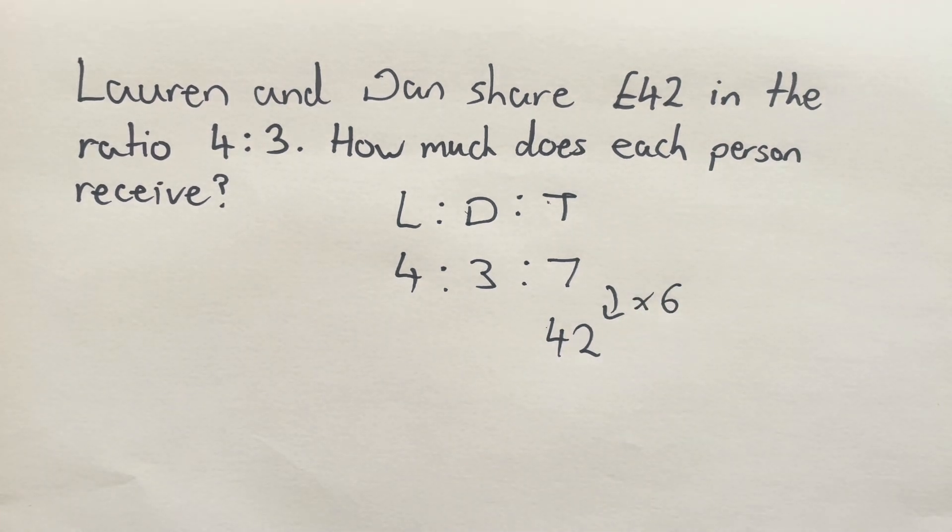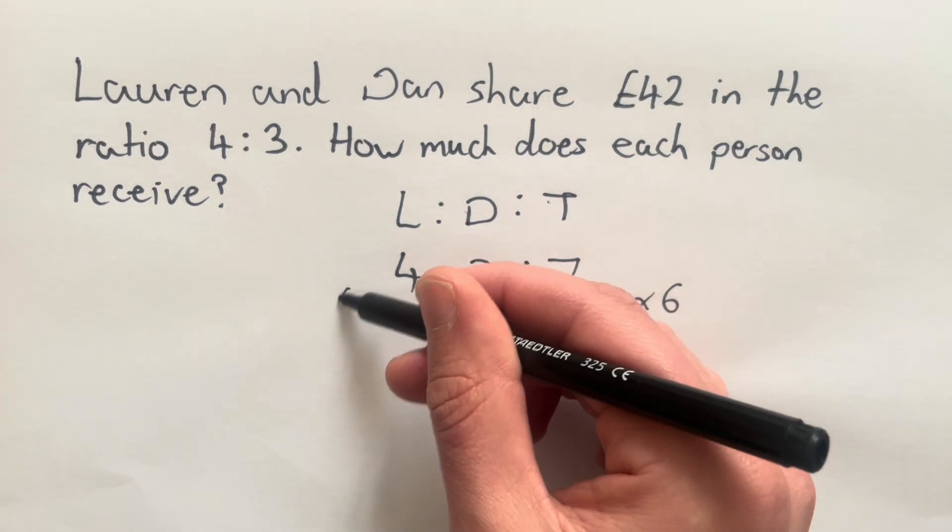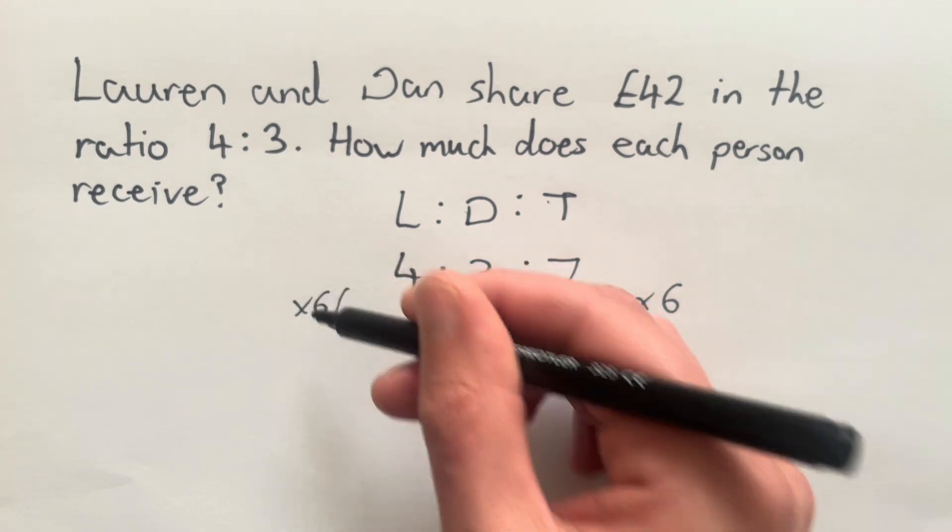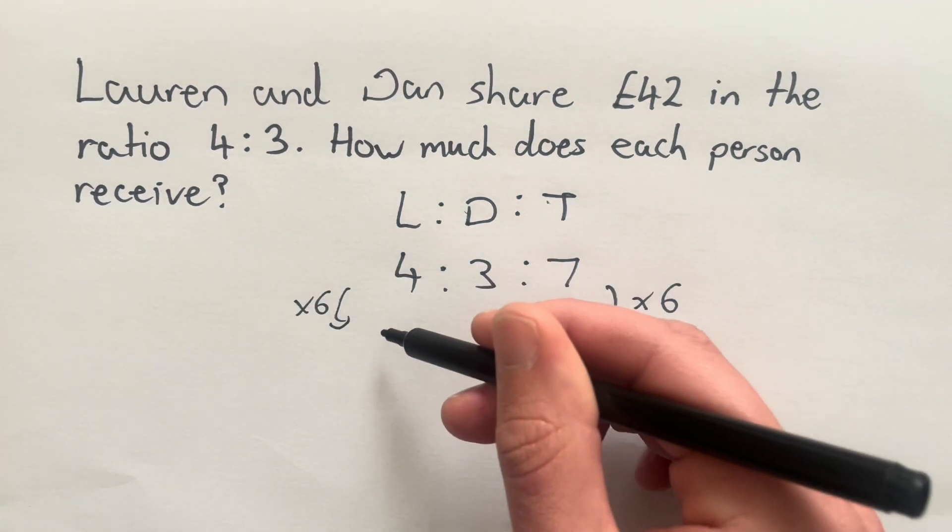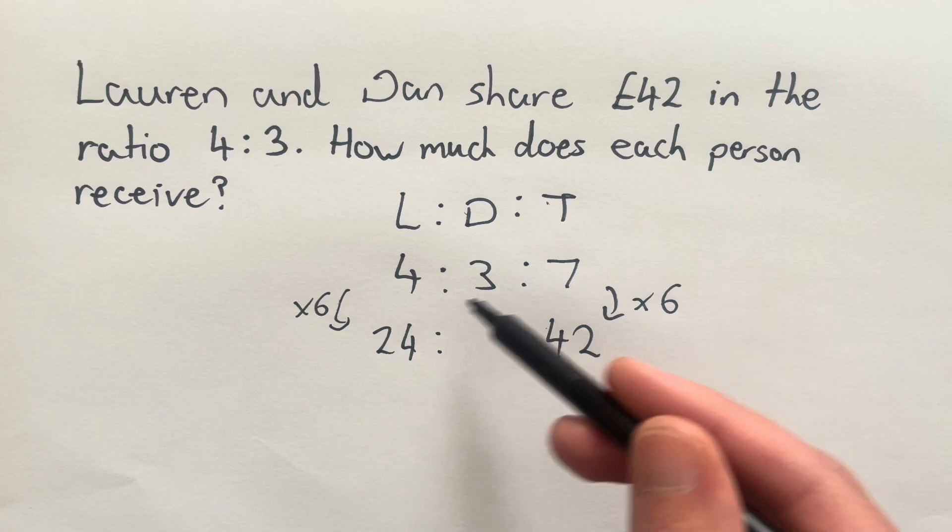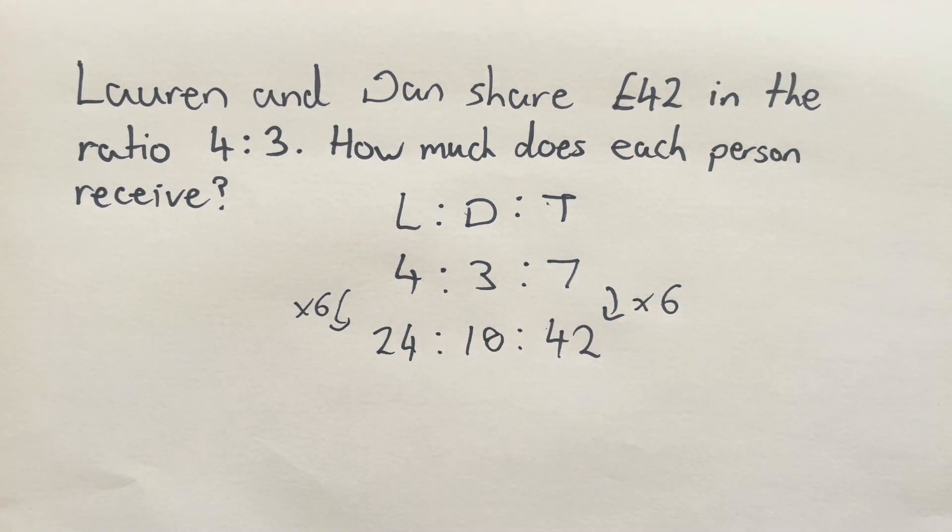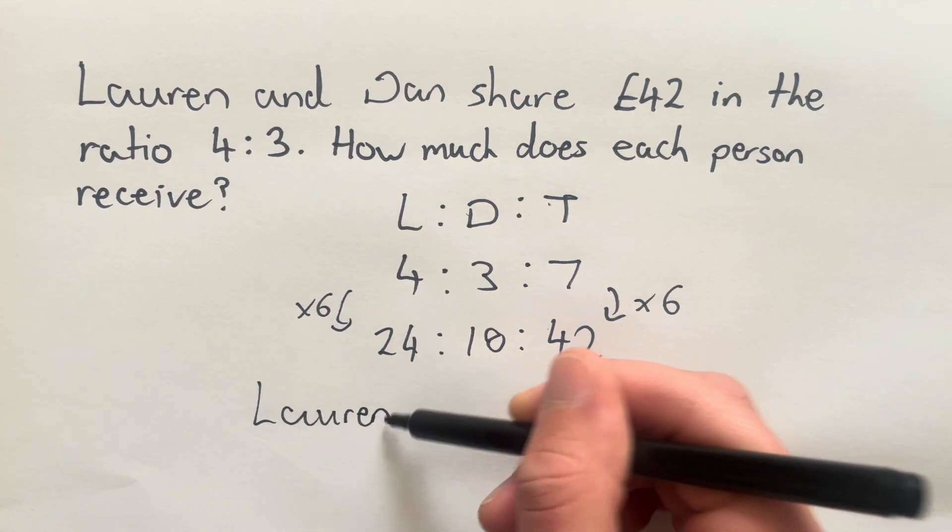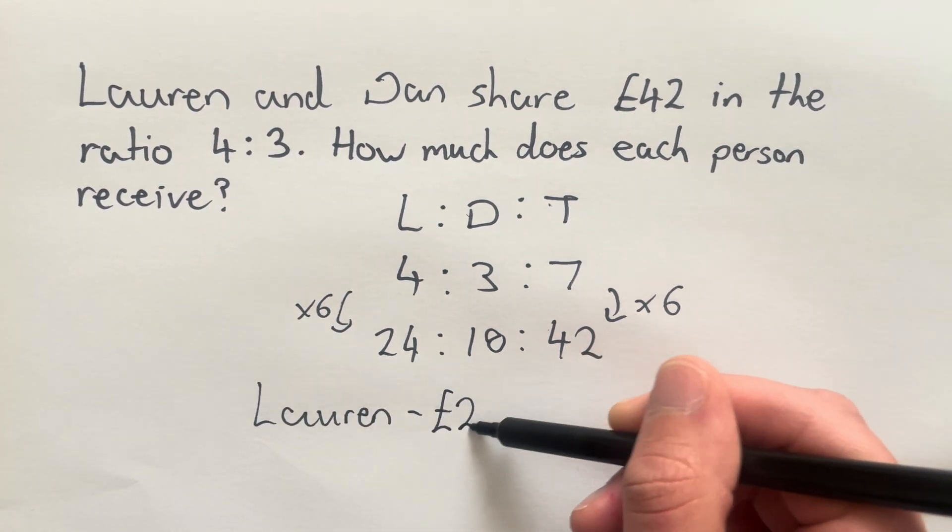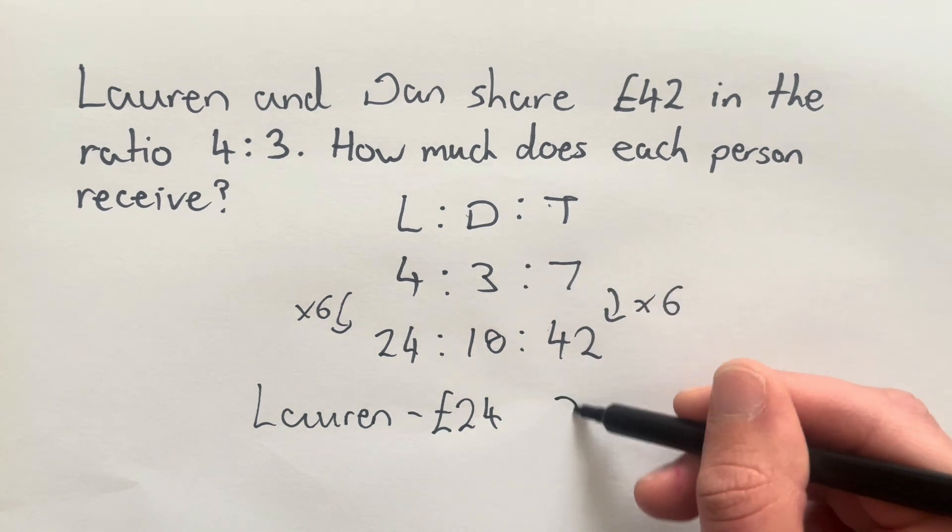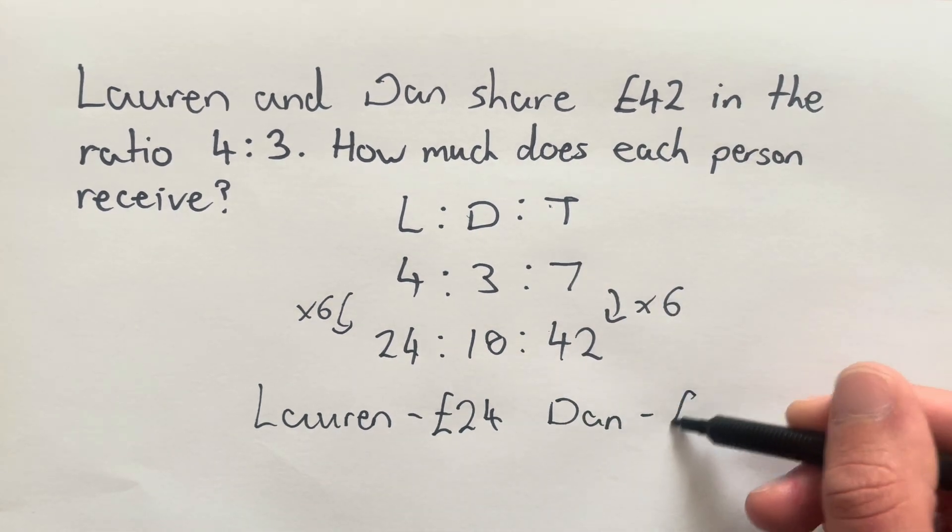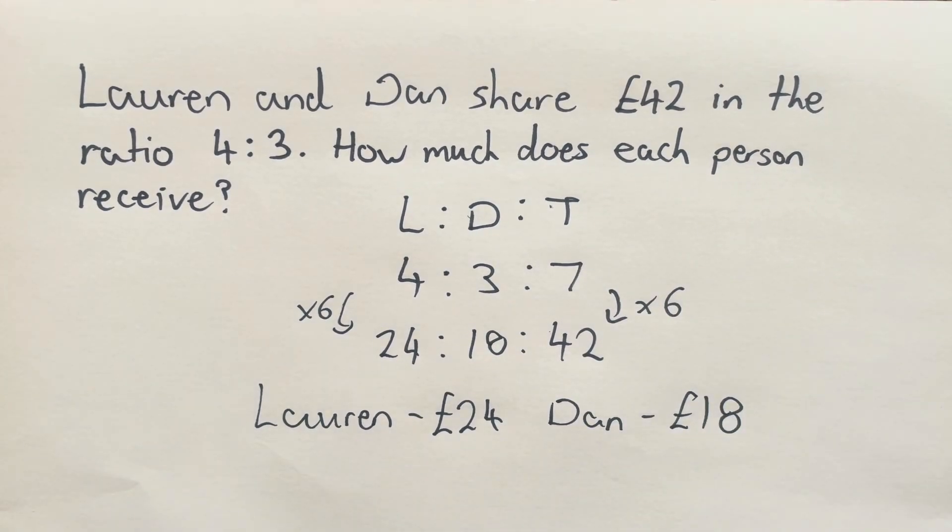Four times six gives me 24. Three times six is 18. And since 24 and 18 is 42, I'm happy with those two numbers. So this tells me that Lauren receives £24 and that Dan receives £18. And that's our final answer.